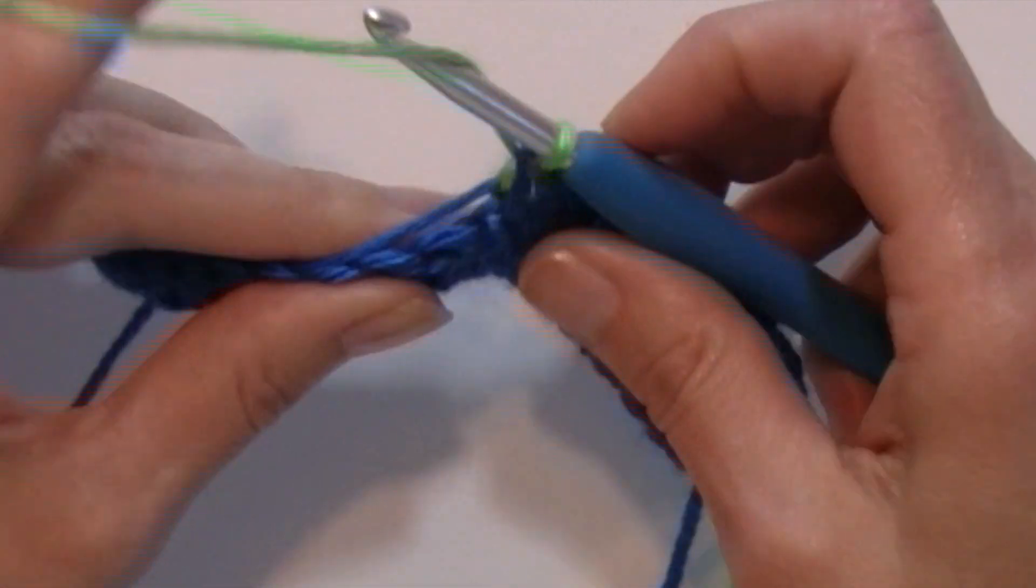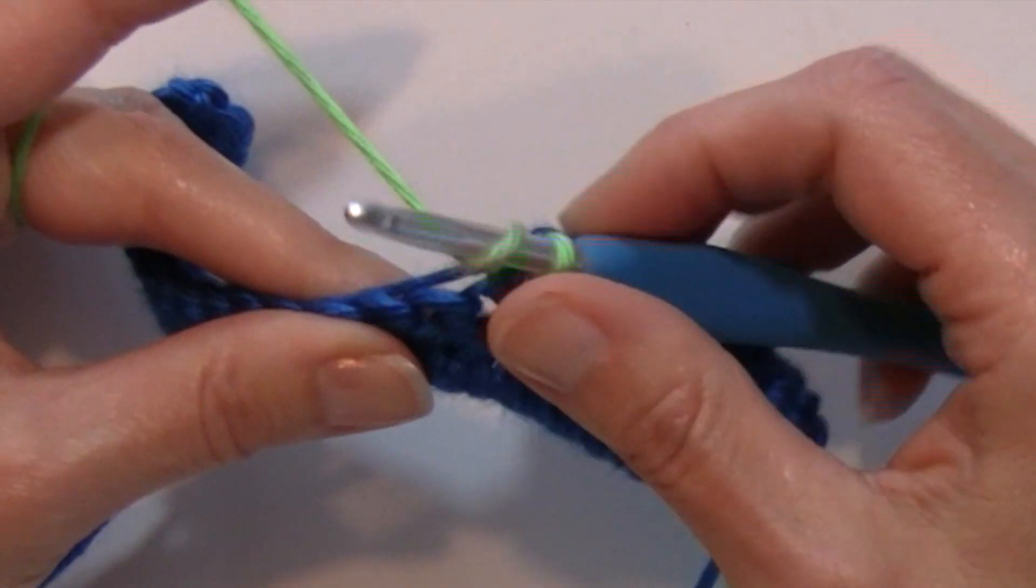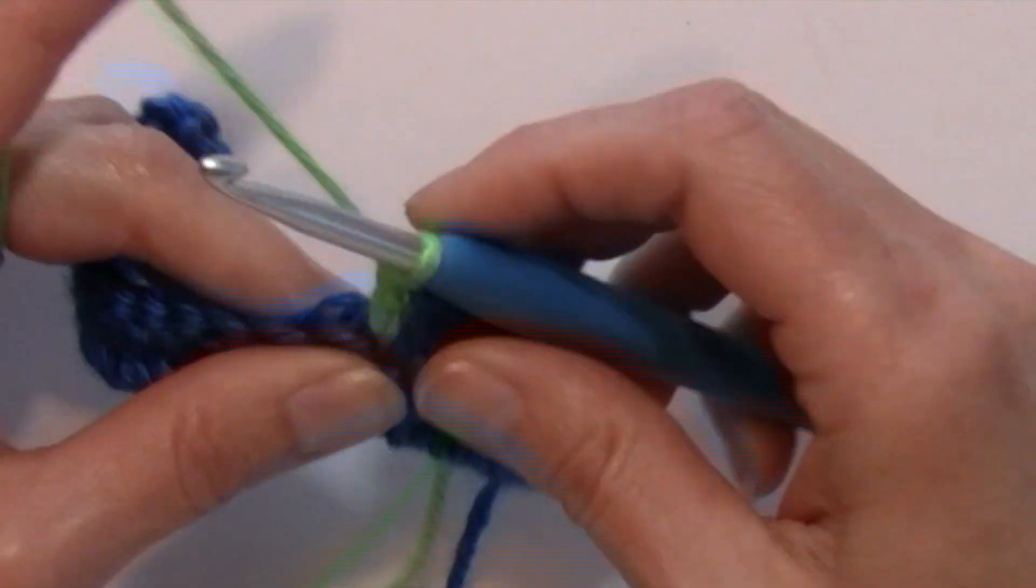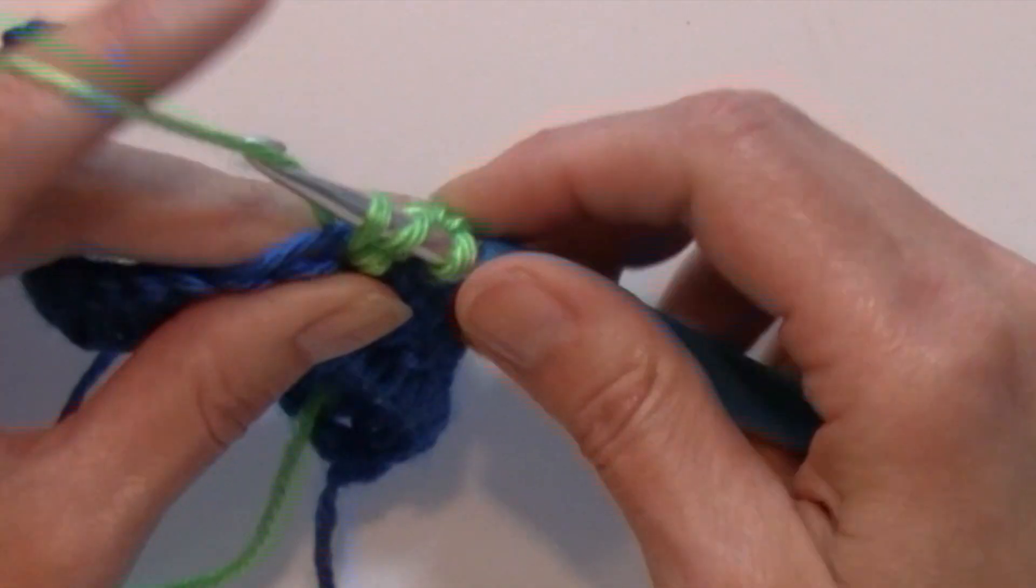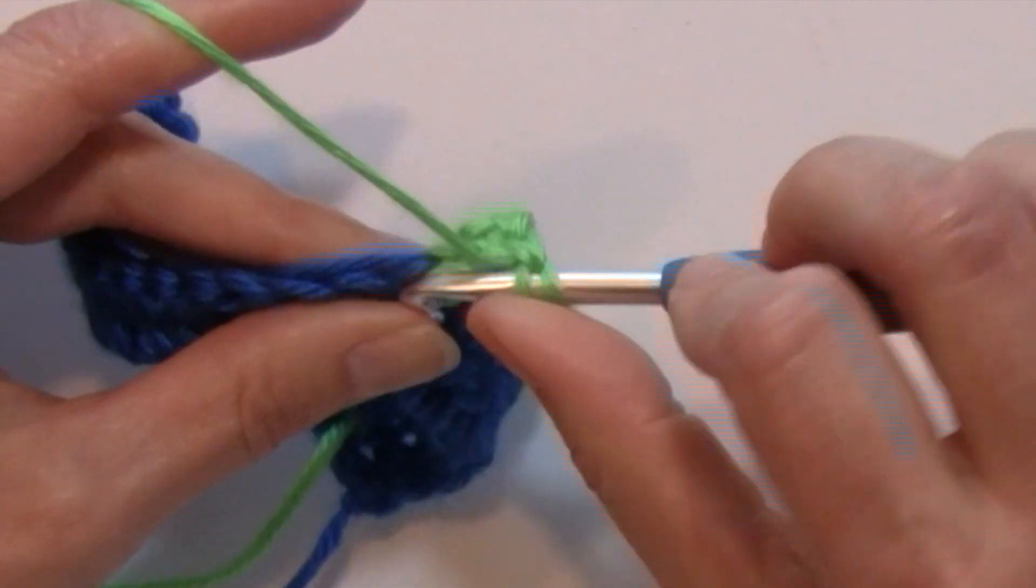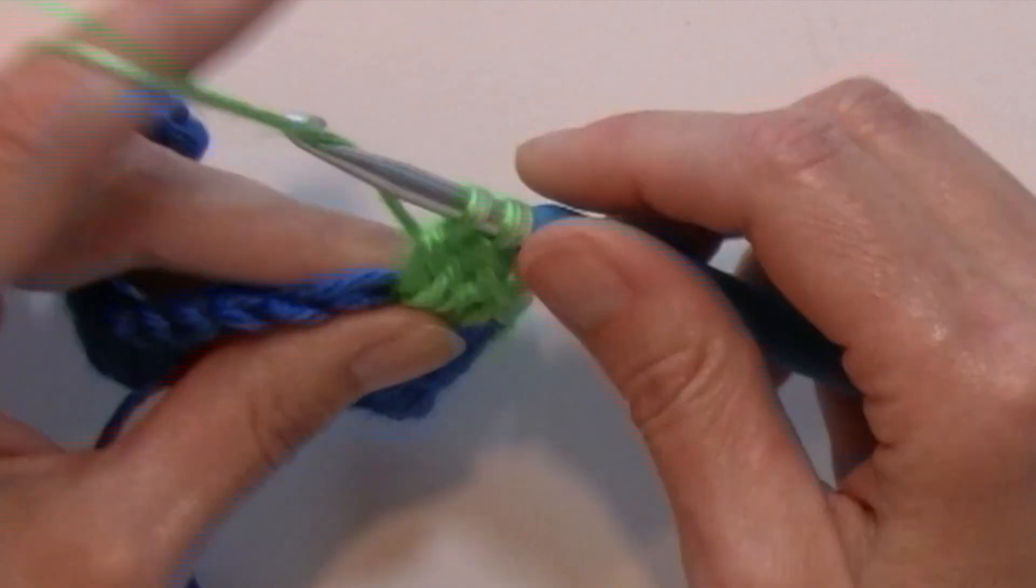I'm going to work over color A because I'm going to be using it again, and I'm going to work four double crochets in that next stitch: one, two, three, four.